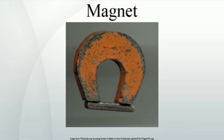A good permanent magnet can have a magnetization as large as a million amperes per meter. In SI units, the relation B = μ₀(H + M) holds, where μ₀ is the permeability of free space, equal to 4π × 10⁻⁷ T·m/A. Materials that are not permanent magnets usually satisfy the relation M = χH, where χ is the dimensionless magnetic susceptibility. Most non-magnetic materials have a relatively small χ, on the order of a millionth, but soft magnets can have χ on the order of hundreds or thousands.